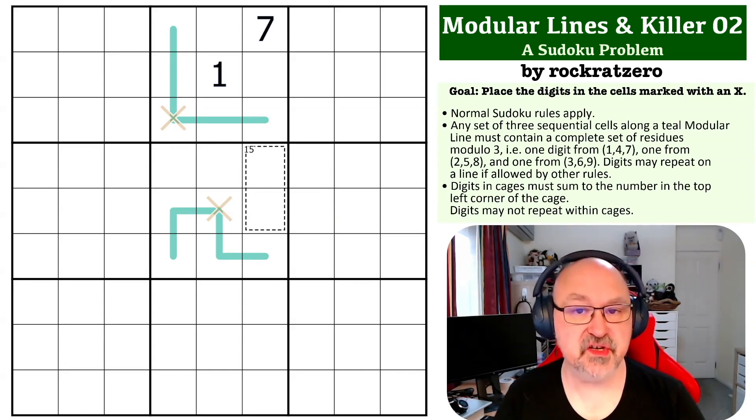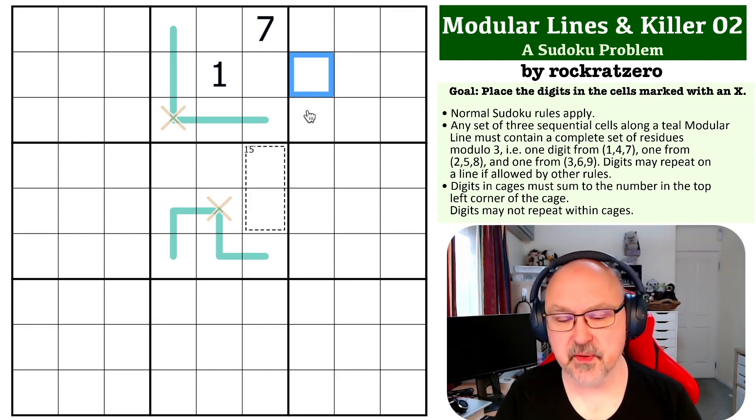Normal Sudoku rules apply, and the goal is to place the digits in the cells marked with an X. You'll find a link to this problem below if you wish to attempt it yourself. In killer cages, digits placed in the cells must sum to the number in the top left corner of the cage, and digits cannot repeat within cages.